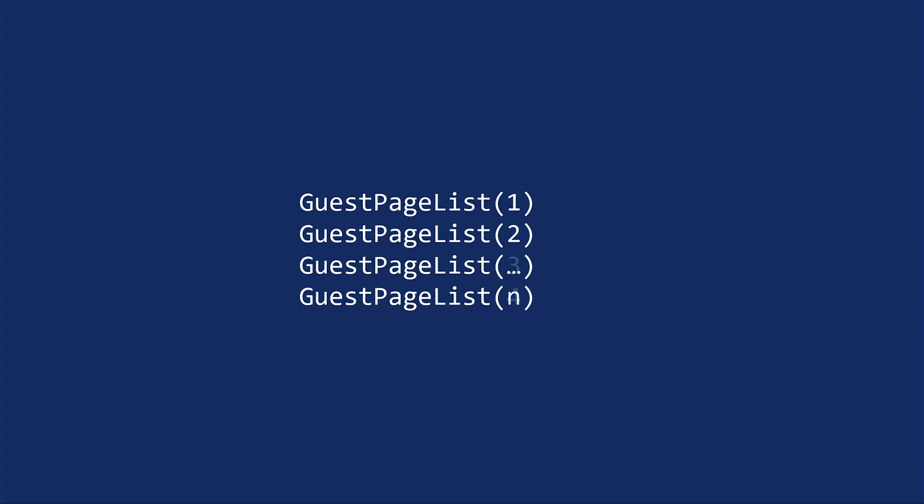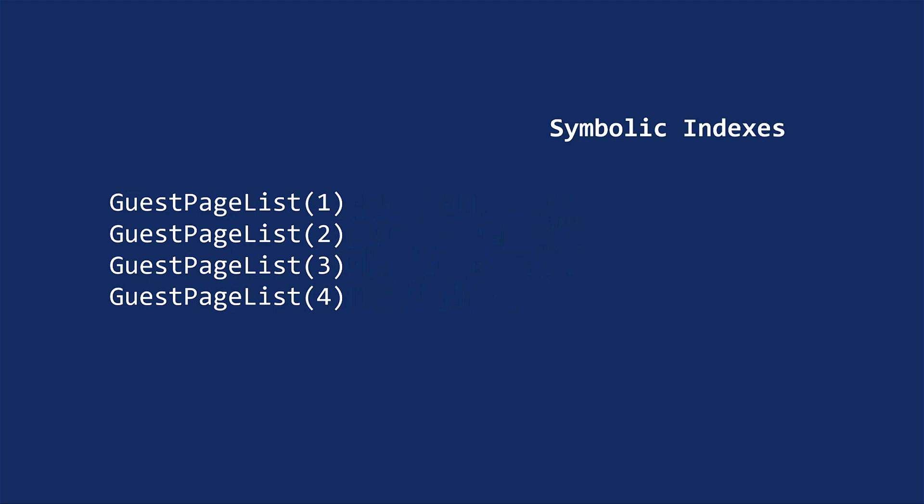Let's start simple. When we refer to an item within a page list, we can use a numeric index, for example, 1, 2, 3. Now, these symbolic indexes allow us to refer dynamically to specific positions of a page list, to either modify or add new items.